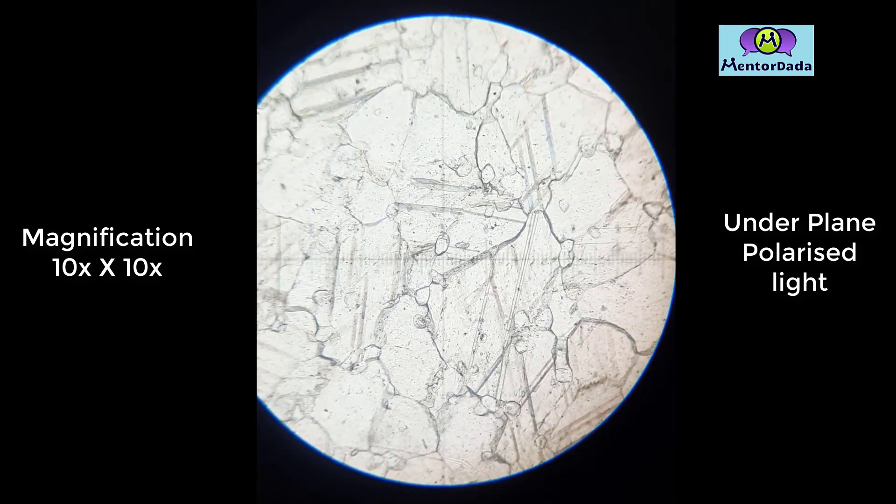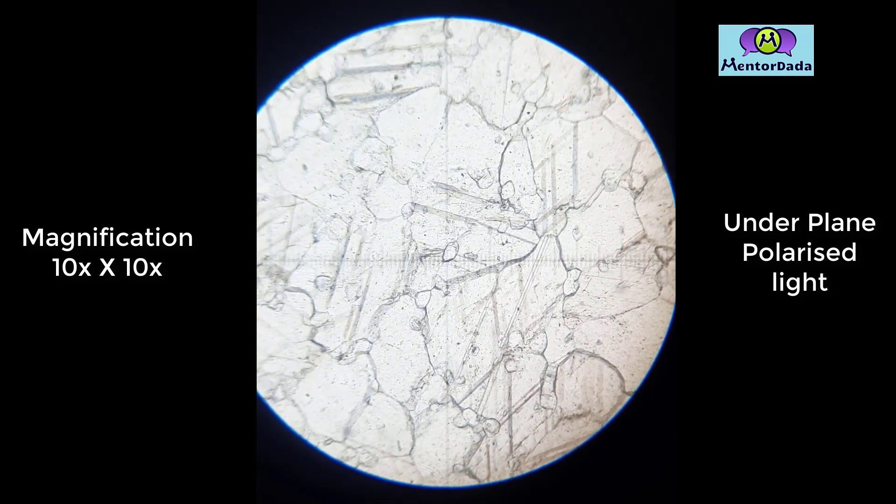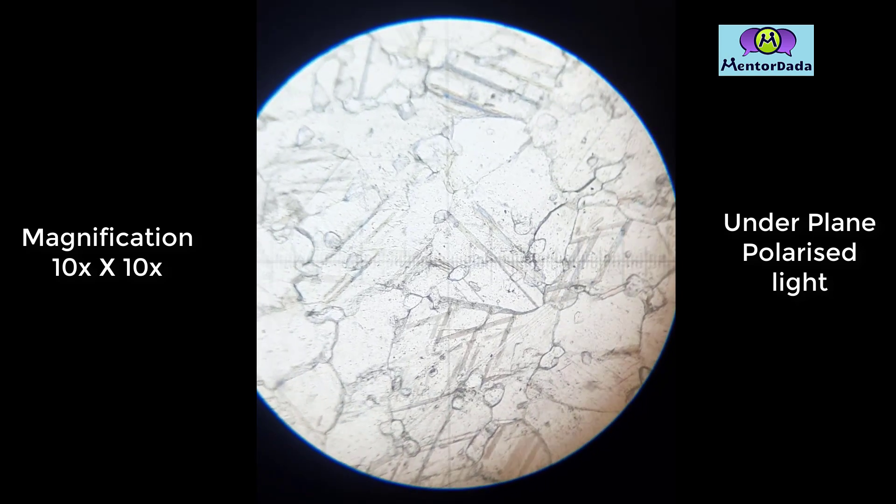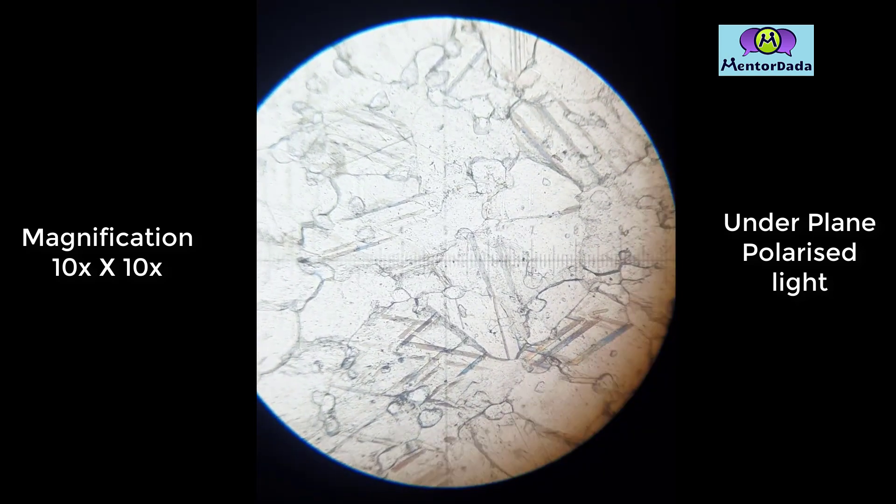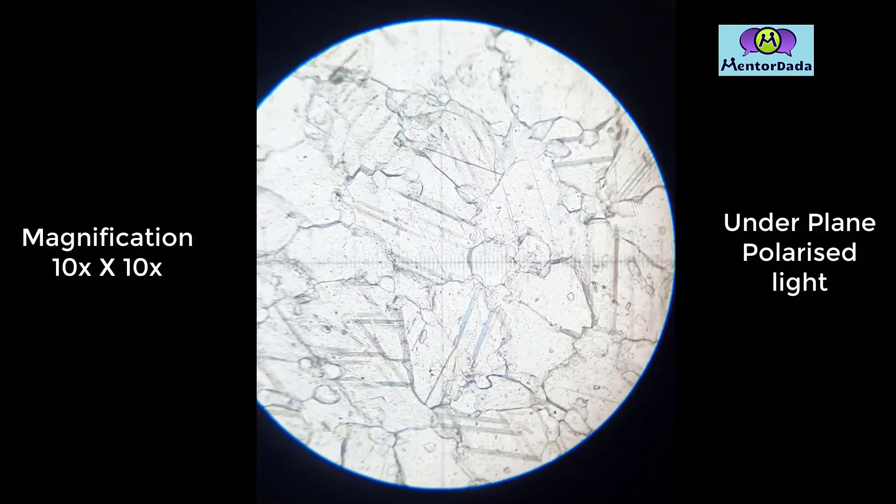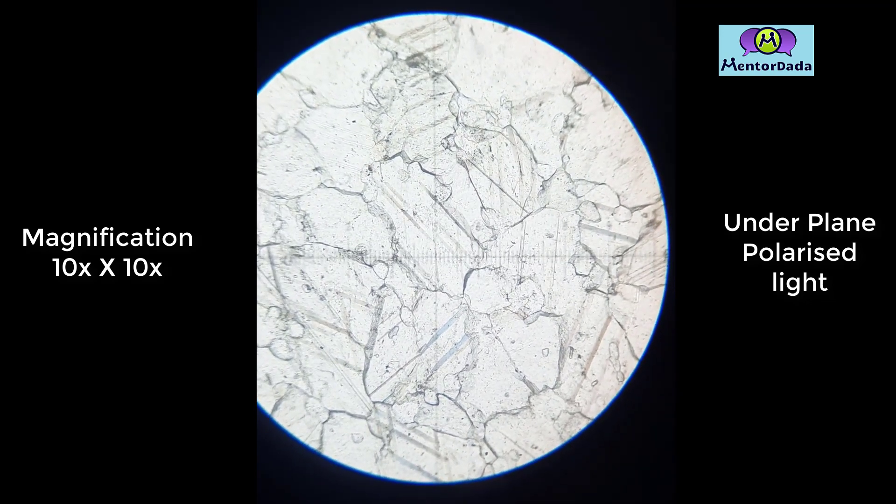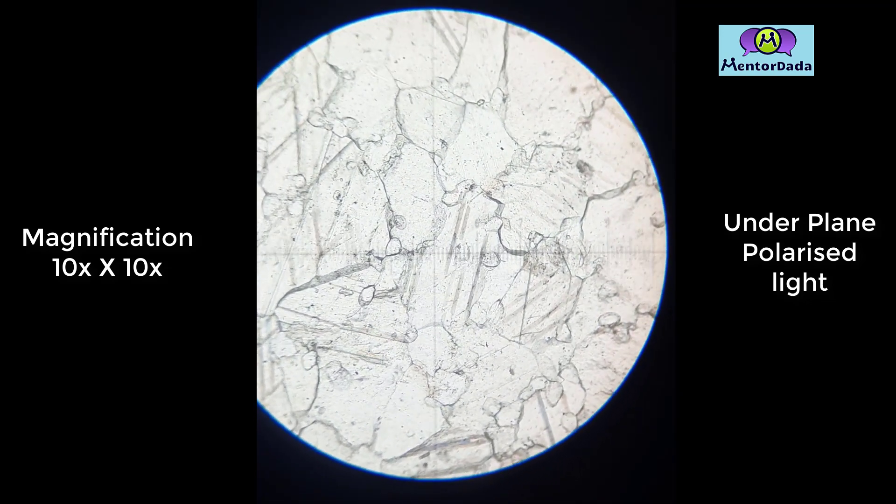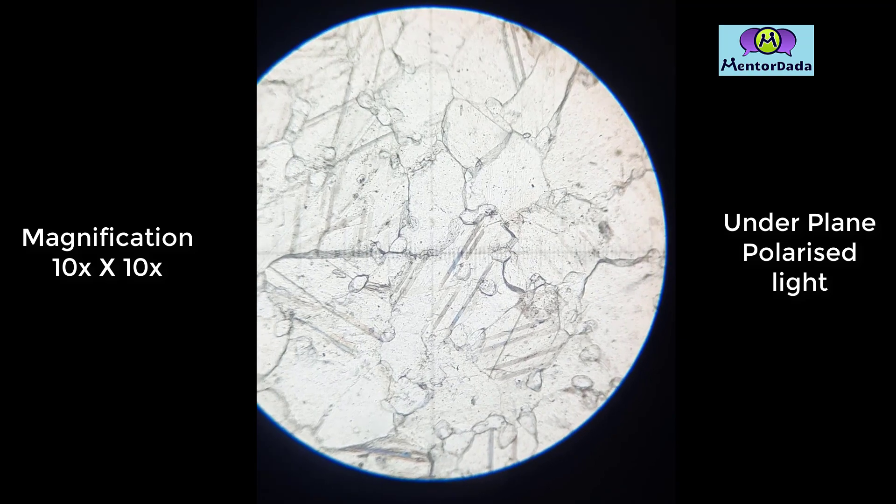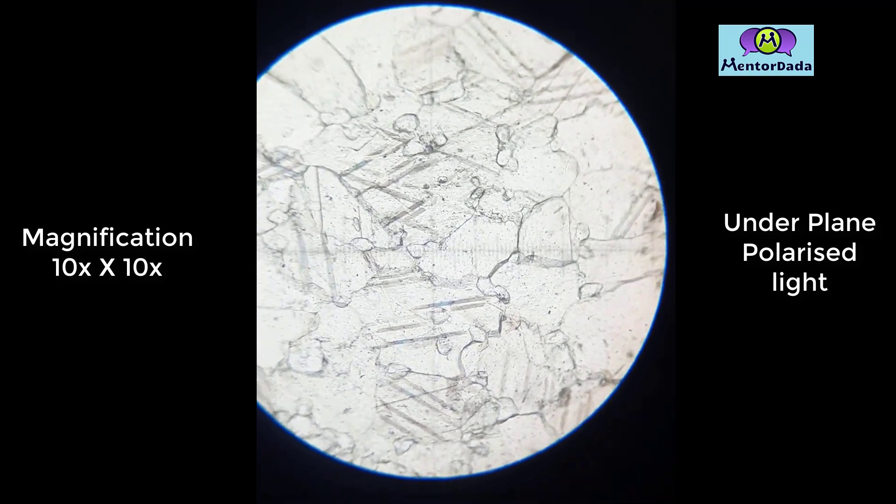We view the mineral thin section under the petrographic microscope. The thin section is prepared at a thickness of 30 microns and is now set on the slide by epoxy glue.